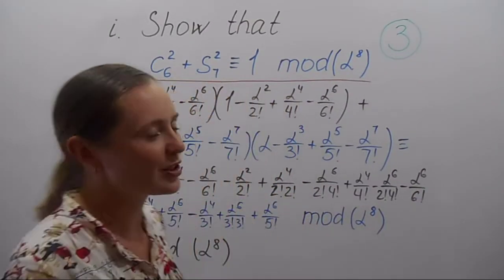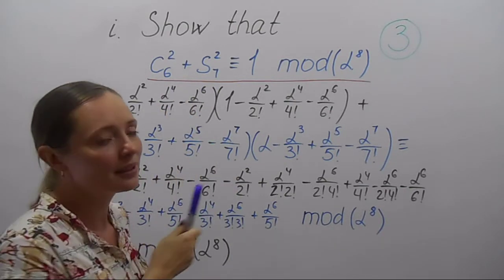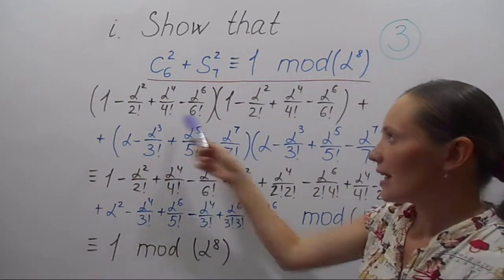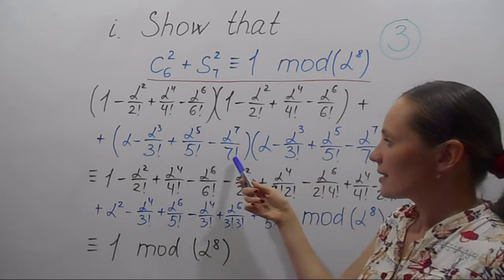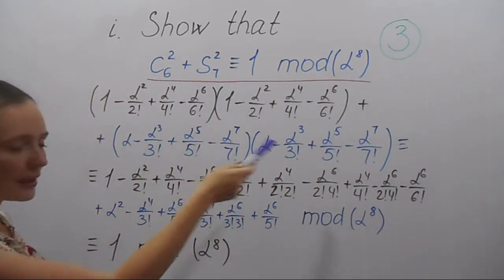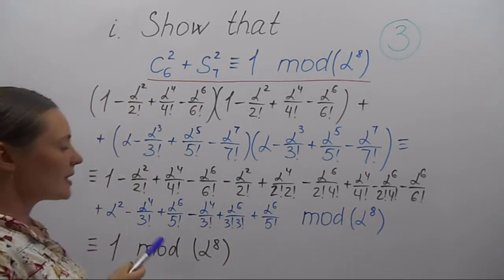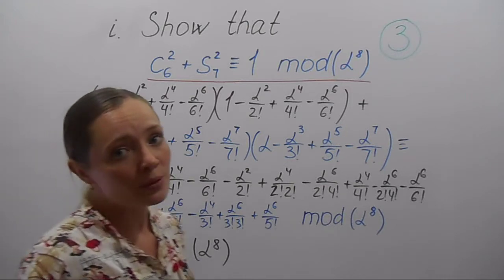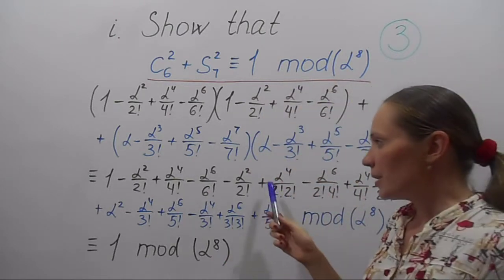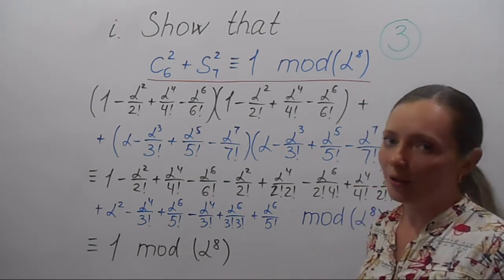The first part of this problem is to show that the sum of squares of the cosine polynomial C6 and the sine polynomial S7 is congruent to 1 mod α8. We write cosine times cosine plus sine times sine polynomial, and this expression is congruent to the same expression mod α8, where we write only the α terms with power less than 8. Gathering all terms with the same α, this expression is congruent to 1 mod α8.